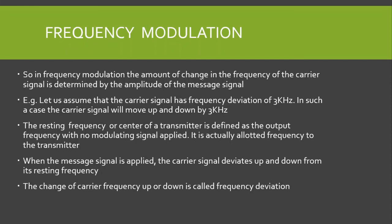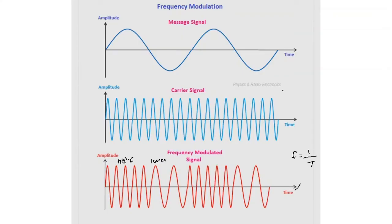In frequency modulation, the amount of change in the frequency of the carrier signal is determined by the amplitude of the message signal. For example, if the carrier signal has a frequency deviation of 3 kilohertz, the carrier signal will move up and down by 3 kilohertz from its resting frequency f0. The frequency deviation delta f is plus or minus 3 kilohertz, so the higher frequency equals f0 plus 3 kilohertz and the lower frequency equals f0 minus 3 kilohertz.